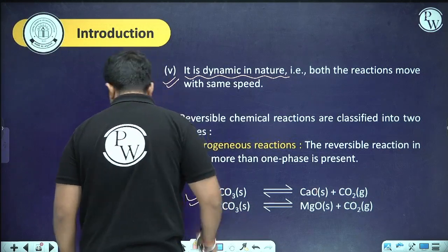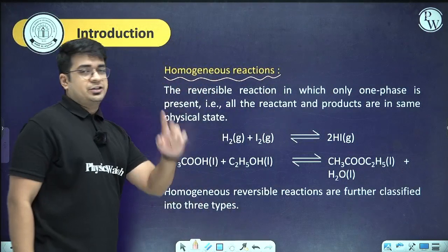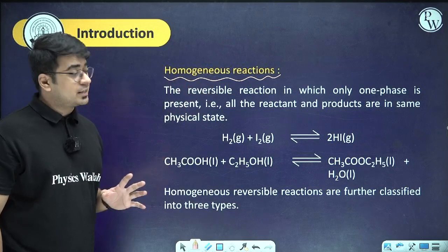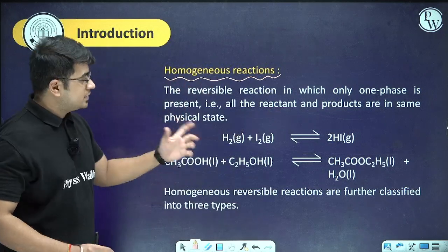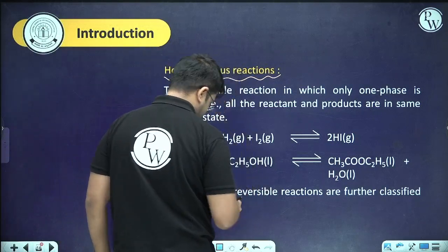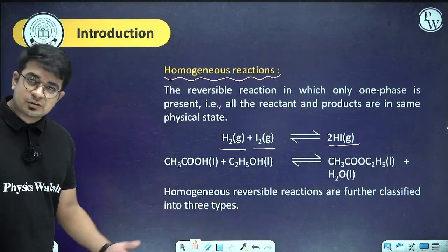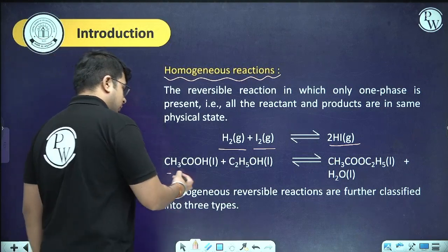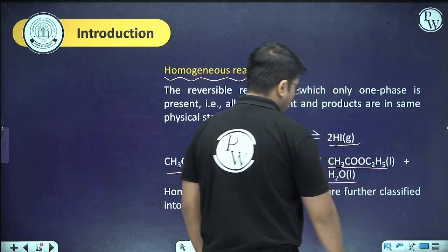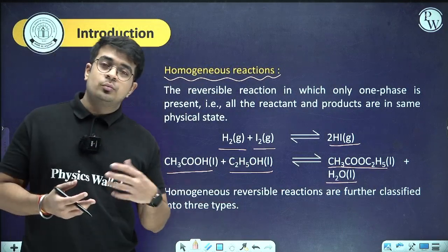Homogeneous reactions are very important — reversible reactions in which only one phase is present, meaning reactants and products are in the same phase. For example: H₂(g) + I₂(g) ⇌ 2HI(g) — all gaseous, so homogeneous. Also: CH₃COOH(l) + C₂H₅OH(l) ⇌ CH₃COOC₂H₅(l) + H₂O(l) — all liquid, also homogeneous.